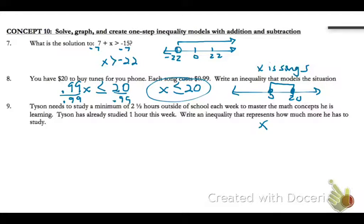So this is the time, that's the unknown, the time that he has to study. He has already studied an hour this week. So we'll add that hour on to the time that he has to study. And then a minimum of two and a half. So that means that his time studying needs to be greater than or equal to two and a half.